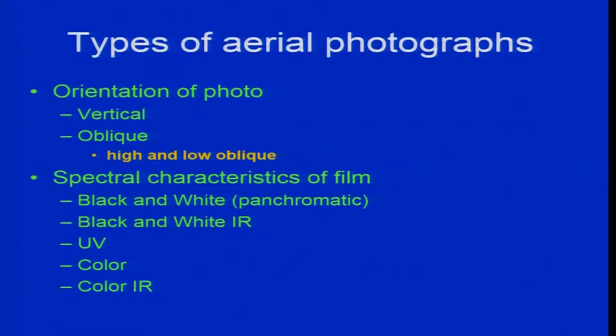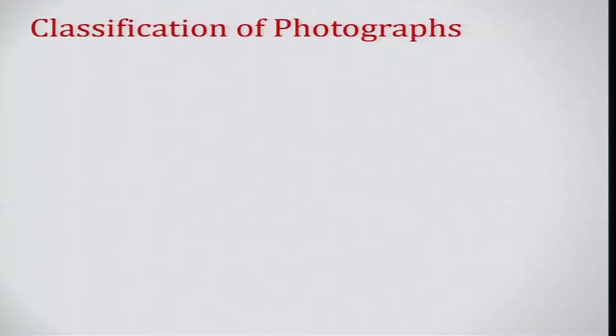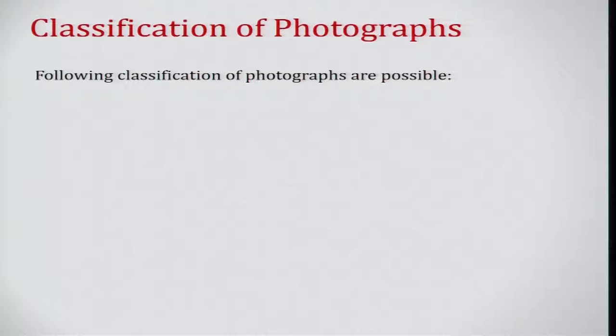Types of aerial photographs depend on the orientation of the photos — that is, the orientation of the sensor or camera used to collect the data. Either the camera is exactly vertical, or it is oblique — either high oblique or low oblique. Spectral characteristics of the film include panchromatic, black and white, infrared, ultraviolet, color, or color infrared.